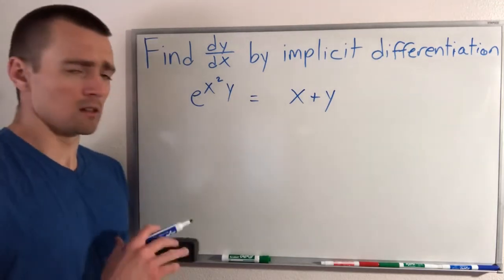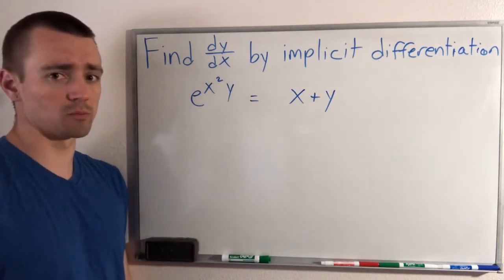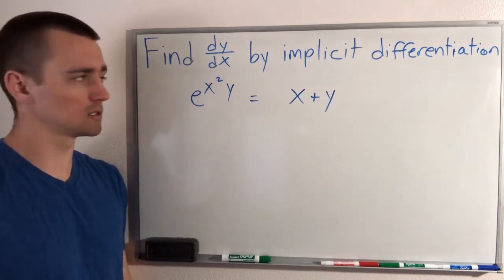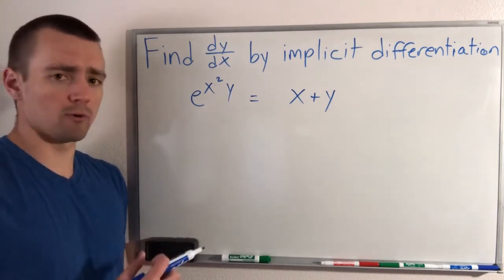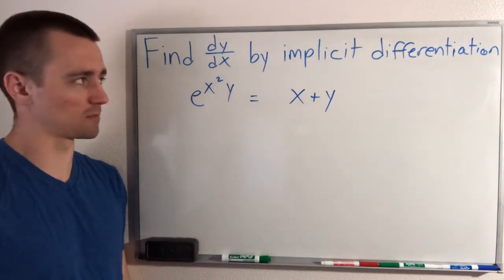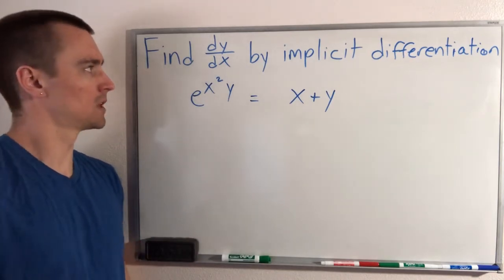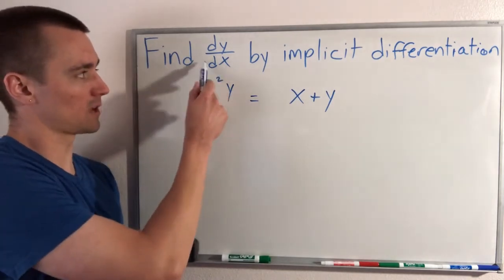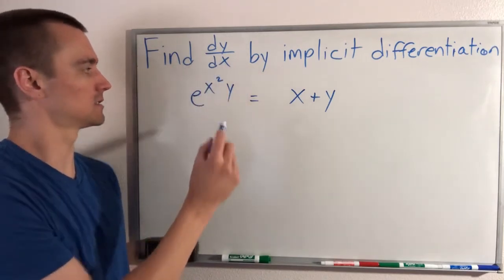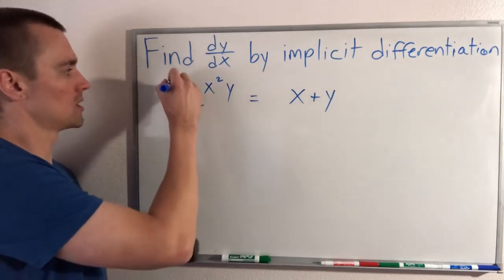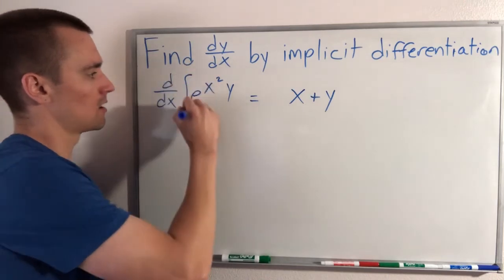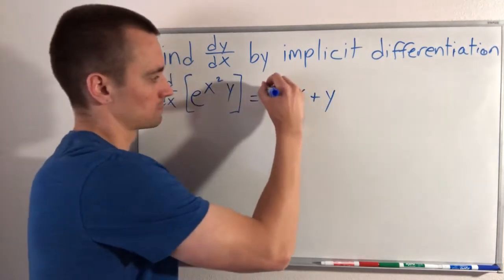Like any other implicit differentiation problem where we have to find dy/dx, all we want to do to start is take the derivative of both sides of our equation with respect to x. We're taking with respect to x because we have dx in our denominator, which indicates that we want to do d/dx of both sides of our equation.